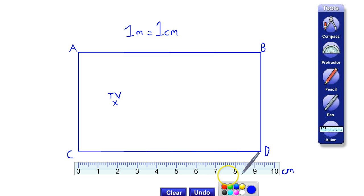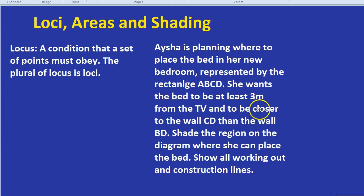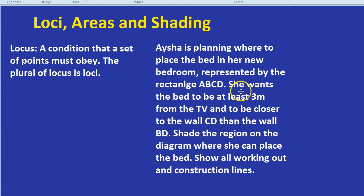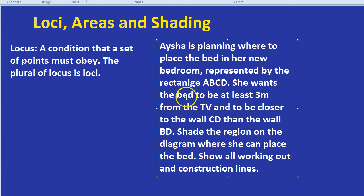Here is the question. Aisha is planning where to place the bed in her new bedroom, represented by the rectangle ABCD. She wants the bed to be at least three metres from the TV, and to be closer to the wall CD than the wall BD. Shade the region on the diagram where she can place the bed.